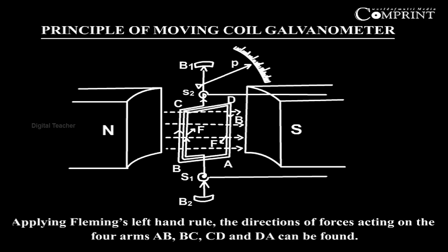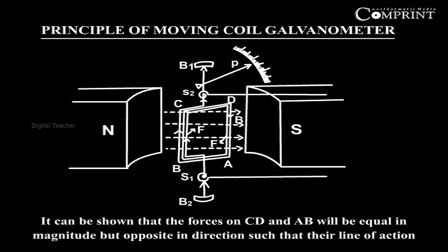Applying Fleming's left hand rule, the directions of the forces acting on the four arms AB, BC, CD, and DA can be found. It can be shown that the forces on CD and AB will be equal in magnitude but opposite in direction such that their line of action is the same. Therefore, these forces get cancelled.